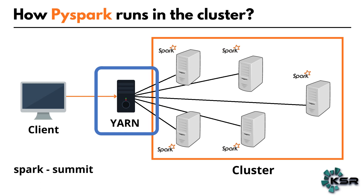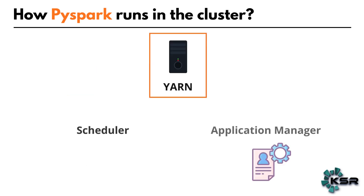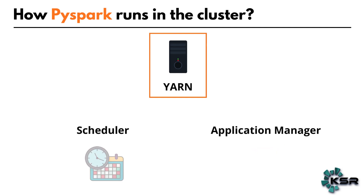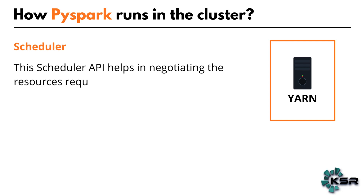The YARN Resource Manager is the central controlling component for resource management. It makes memory allocations based on whatever the job requested. The YARN Resource Manager has two components for performing the requested operations: the Scheduler and the Application Manager.